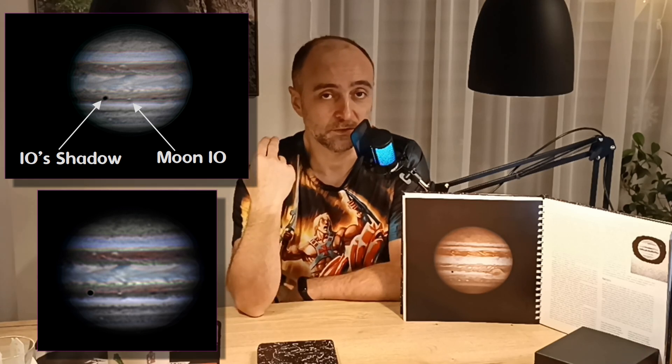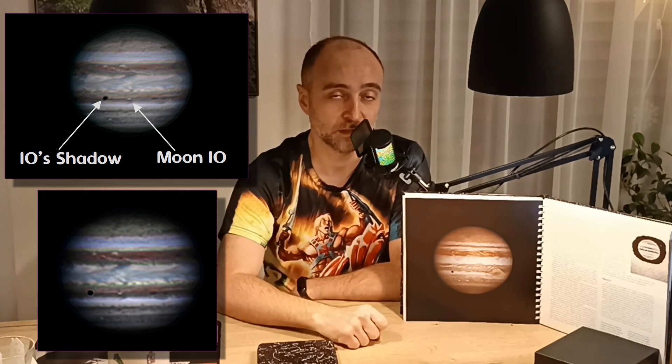Jupiter rotates very fast, so it's about a 50-50 chance you'll capture the red dot. Either way, I was very happy. Another cool thing you can do is spend a few hours processing multiple videos and combine them - you'll find the planet has rotated in the meantime and you can clearly see the rotation. Mars is quite difficult to capture because it comes around only every two years when it's closest to Earth. I clearly managed to capture the ice caps and some surface features.